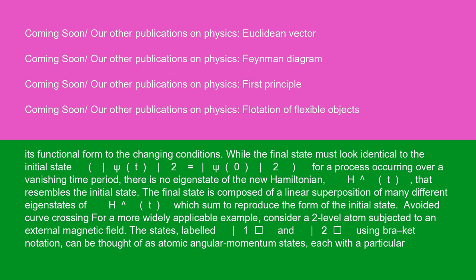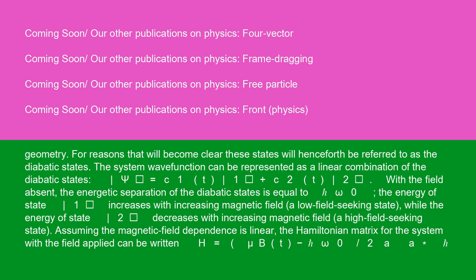Avoided curve crossing: consider a two-level atom subjected to an external magnetic field. The states, labeled |1⟩ and |2⟩ using bra-ket notation, can be thought of as atomic angular momentum states, each with a particular geometry. These states will henceforth be referred to as the diabatic states. The system wave function can be represented as a linear combination: psi = c1(t)|1⟩ + c2(t)|2⟩. With the field absent, the energetic separation of the diabatic states is equal to omega_0. The energy of state 1 increases with increasing magnetic field (a low field-seeking state), while the energy of state 2 decreases with increasing magnetic field (a high field-seeking state). Assuming the magnetic field dependence is linear, the Hamiltonian matrix can be written as H = [mu*B(t) − omega_0/2, A; A*, omega_0/2 − mu*B(t)].